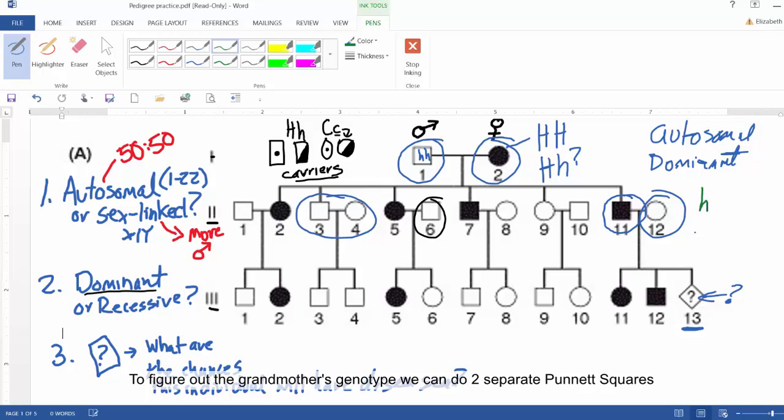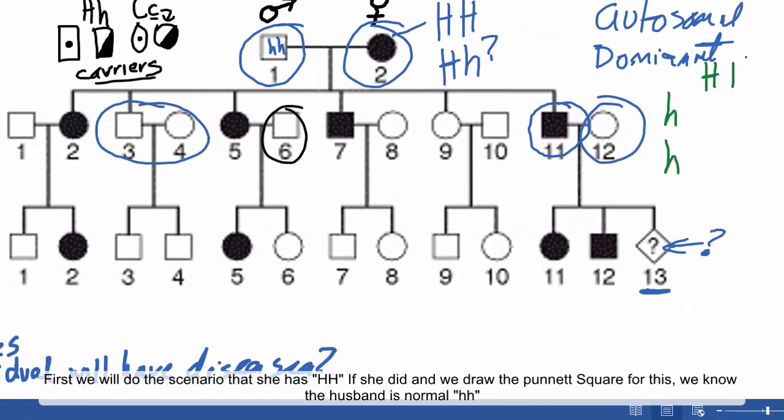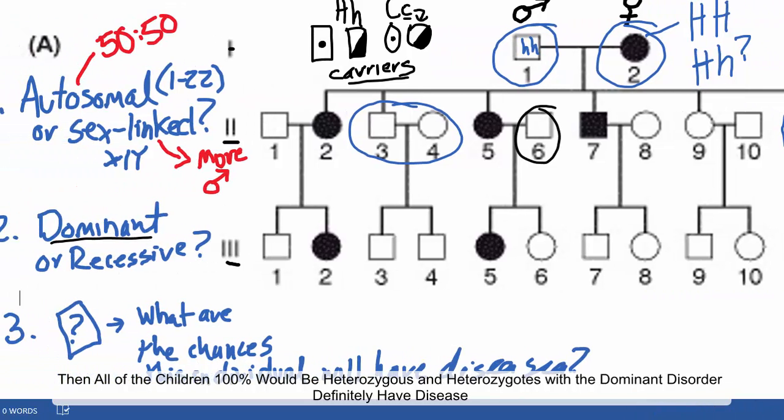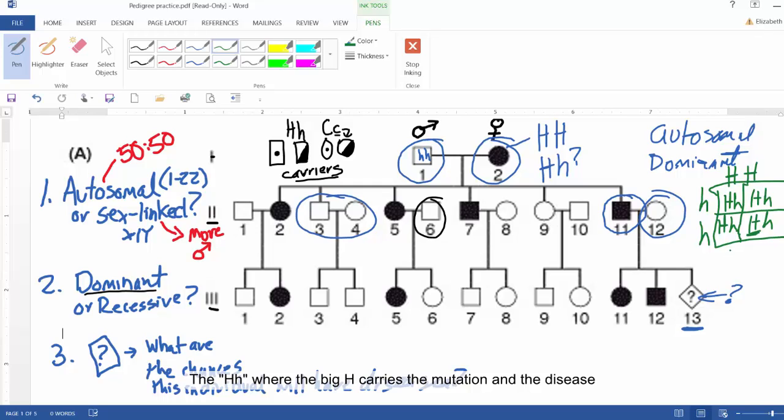So we could do two separate Punnett squares. We know that the husband has little h, little h. So the wife might have big H, big H. And if she did, and we did the Punnett square, draw my square out here, then all of the children, 100% would be heterozygotes. And heterozygotes with the dominant disorder definitely have the disease. The H, the big H is carrying the Huntington's mutation.